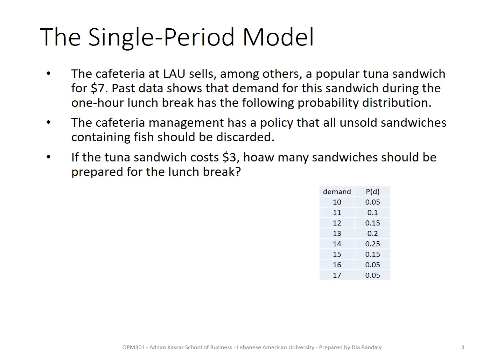Here's an example from LEU cafeteria, where a very popular item is the tuna sandwich. They sell it for $7, and historical data shows demand during the lunch break follows a discrete probability distribution. Demand can be 10, 11, 12, ... up to 17 sandwiches, with a corresponding probability for each value.